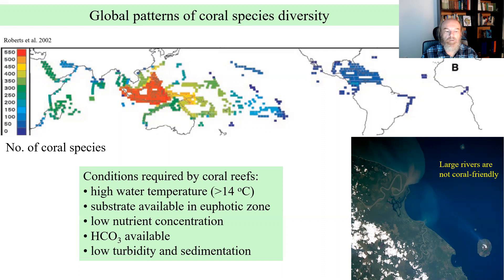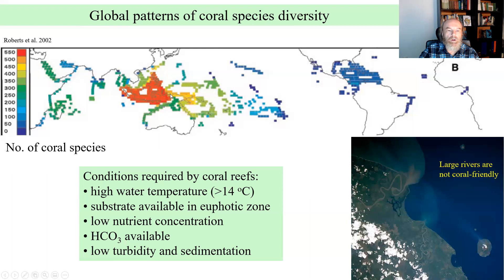And finally, there has to be water acidity which is suitable for calcification, so they need CO3 available for building their structures. All this causes corals to be quite restricted. Their patterns of species diversity are centered on what is called the Coral Triangle — the area between New Guinea and Northwest Australia, continuing to Java, Sumatra, and in the north to the Philippines.